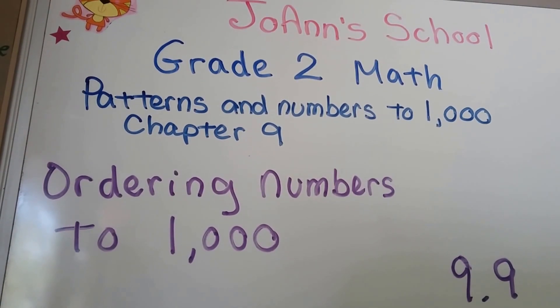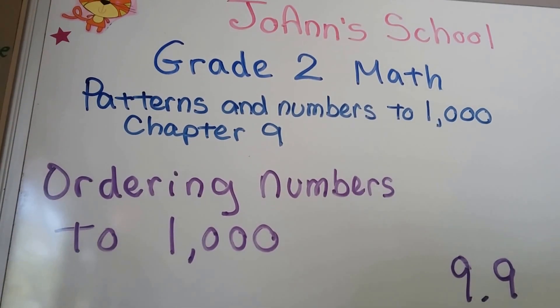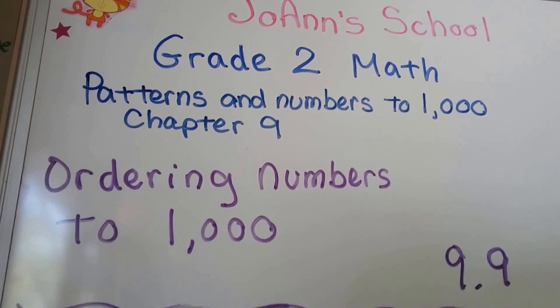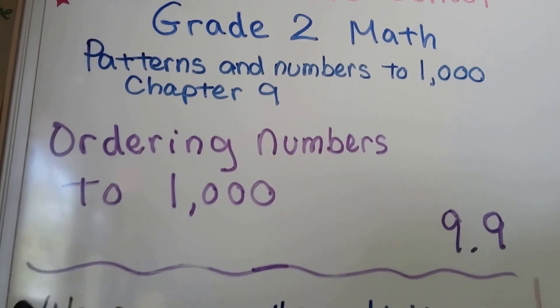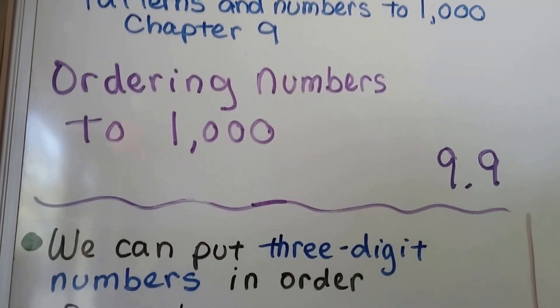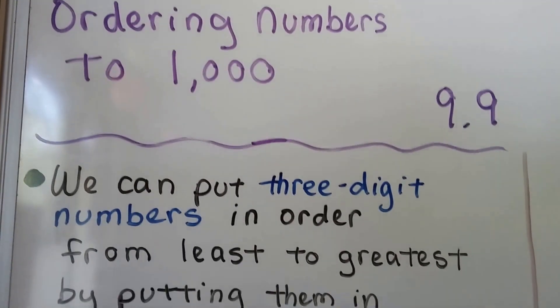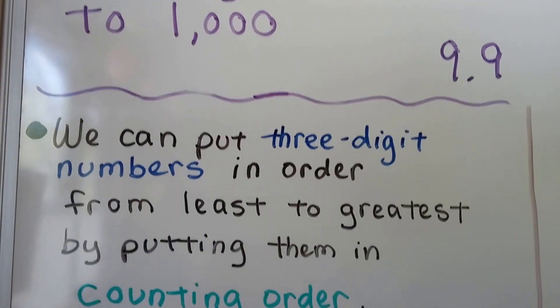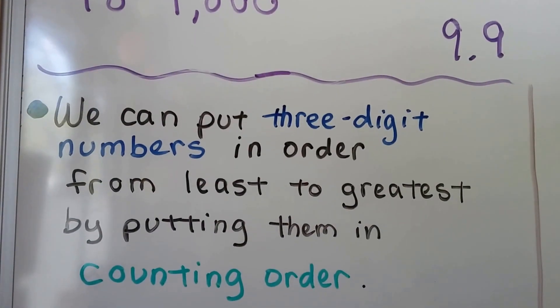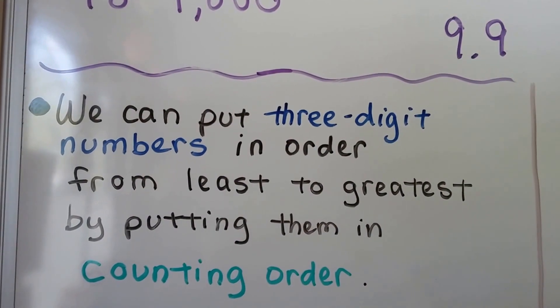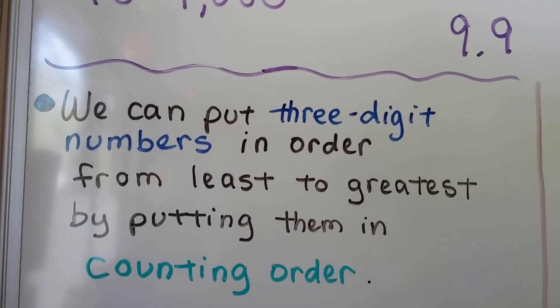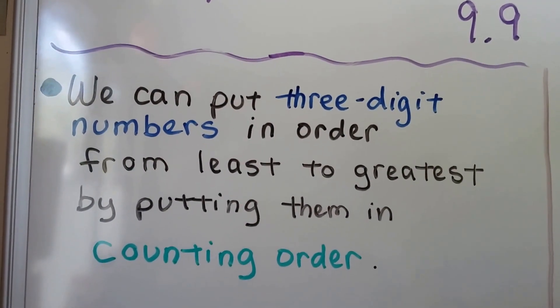Ordering numbers to 1,000. We can put three-digit numbers in order from least to greatest by putting them in counting order.